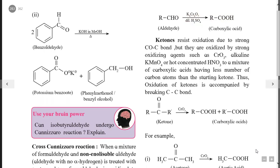Oxidation of ketones is difficult because there is a C–C bond at the carbonyl carbon, and breaking this bond requires strong oxidizing agents such as CrO3 (chromic anhydride), alkaline KMnO4, or hot concentrated nitric acid. These yield a mixture of carboxylic acids containing fewer carbon atoms than the original ketone.